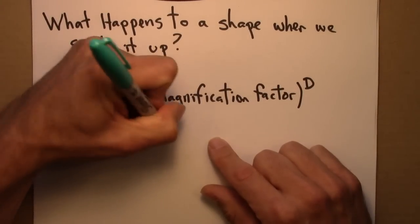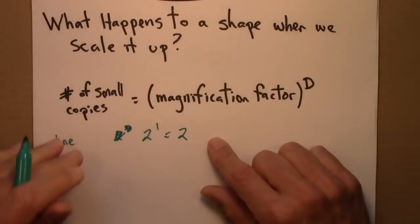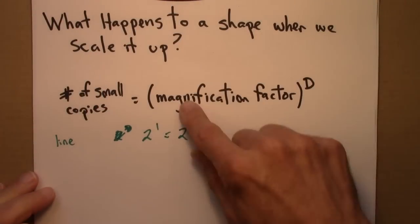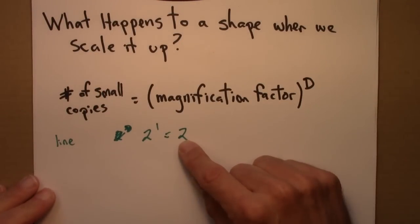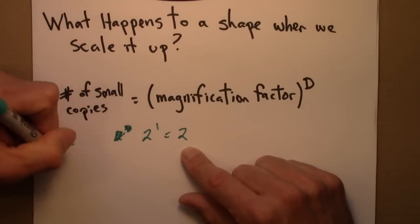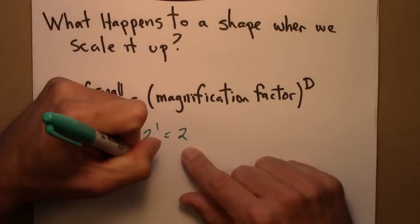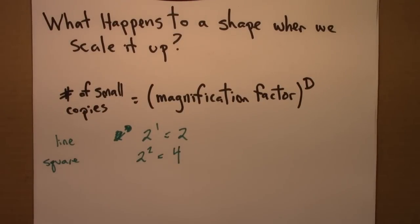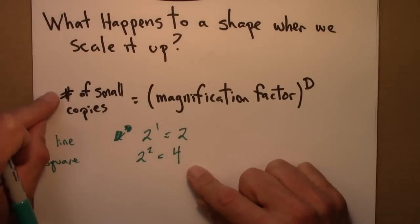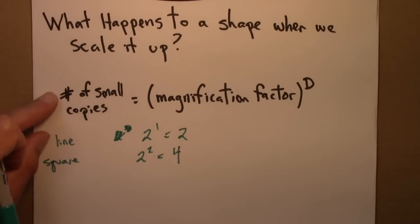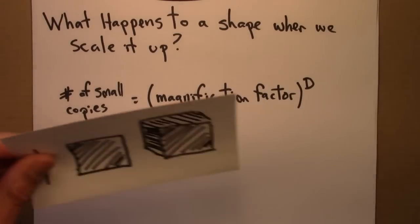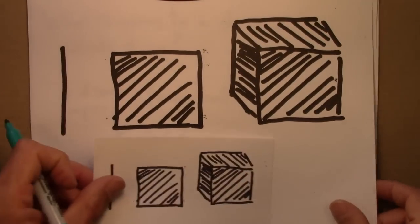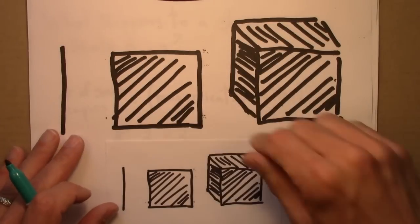For the line, two to the one is two. So if we double, the magnification factor now is two, we have twice as much line, twice as many small lines as we did before. For this square, it's four. So now I'm thinking not so much, or not only number of small copies, but maybe something like the overall mass, the amount of material, if this is a square carpet or something, the amount of material in the carpet.